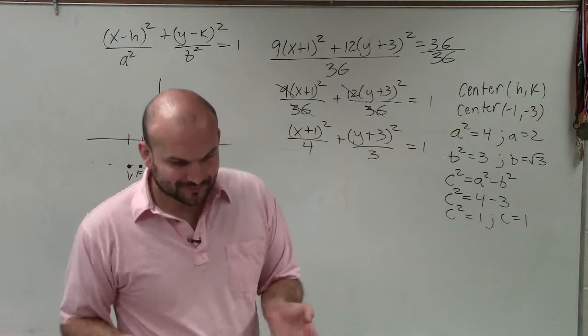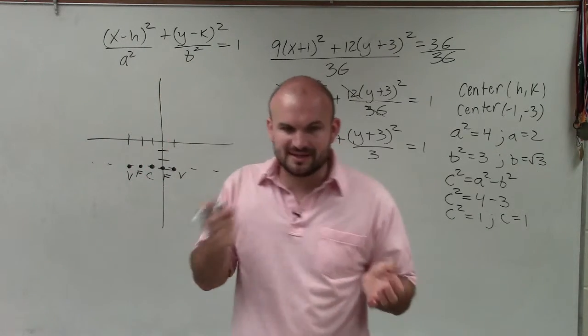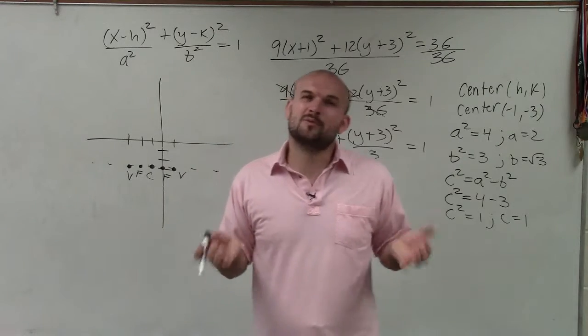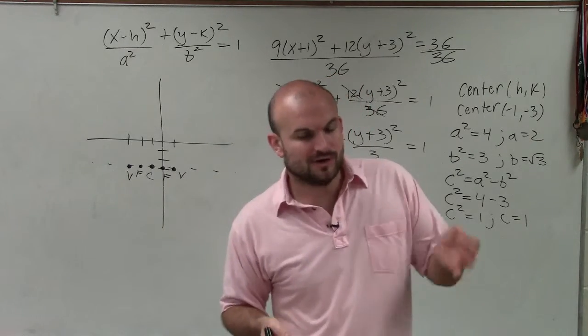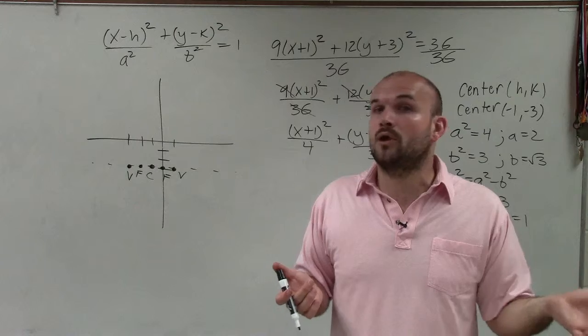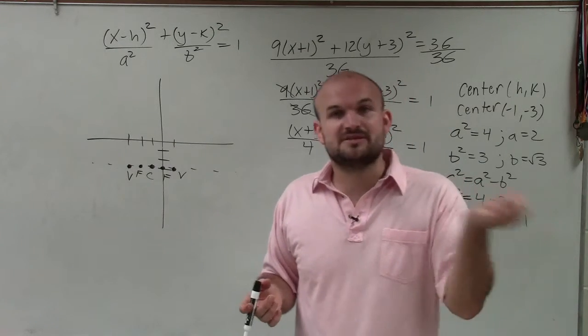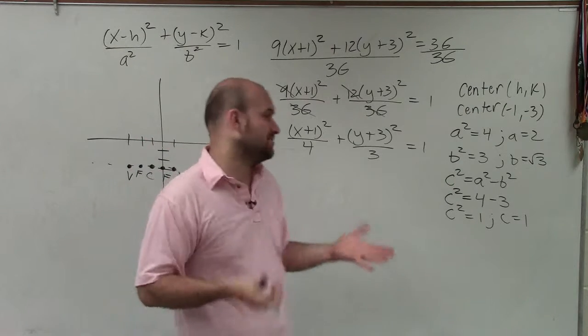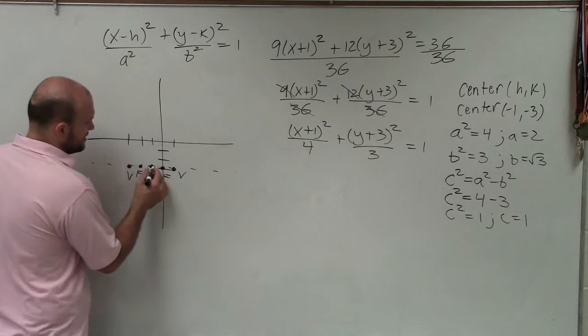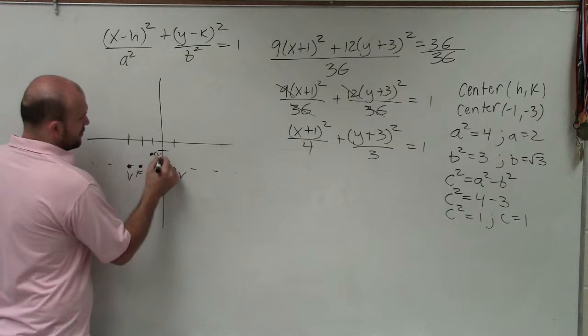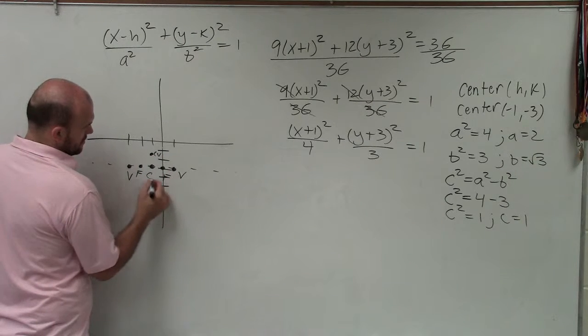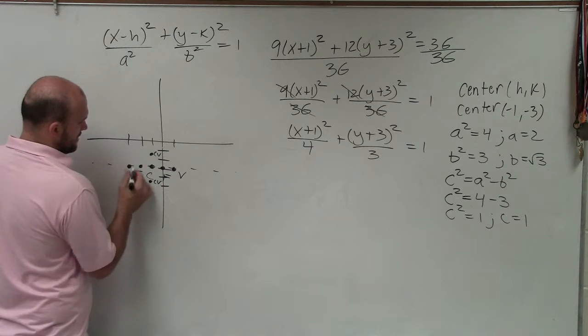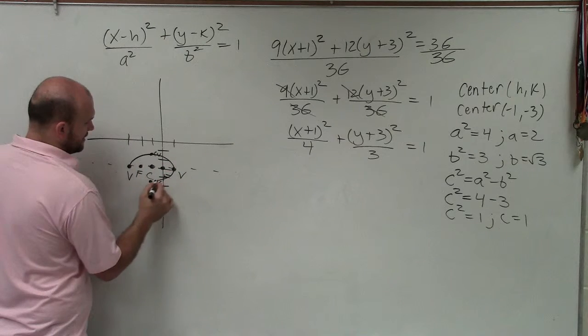And square root of 3, you want to think about that. What is the decimal approximation of that? Well, it has to be larger than 1 because 1² = 1, and it has to be smaller than 2 because 2² = 4. So it's probably going to be 1 and a decimal. And really, just estimate where it's going to be for the co-vertices. So now I can graph my ellipse there.